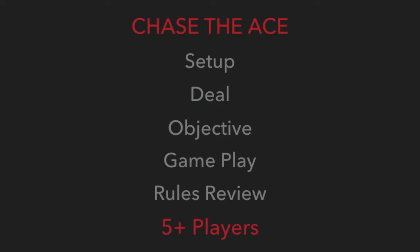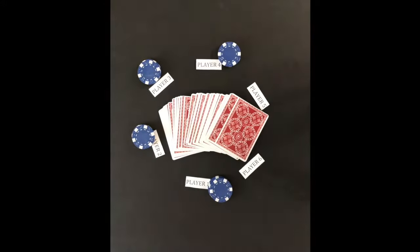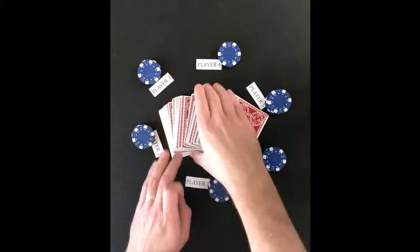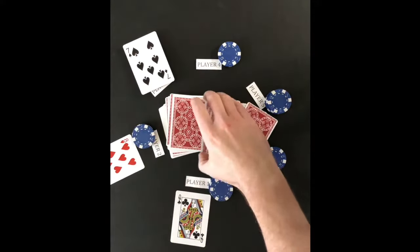The game is played with five or more players. Before the cards are dealt, each player is given three tokens to represent each player's three lives. Then each player draws one card. The player with the highest card is the first dealer.